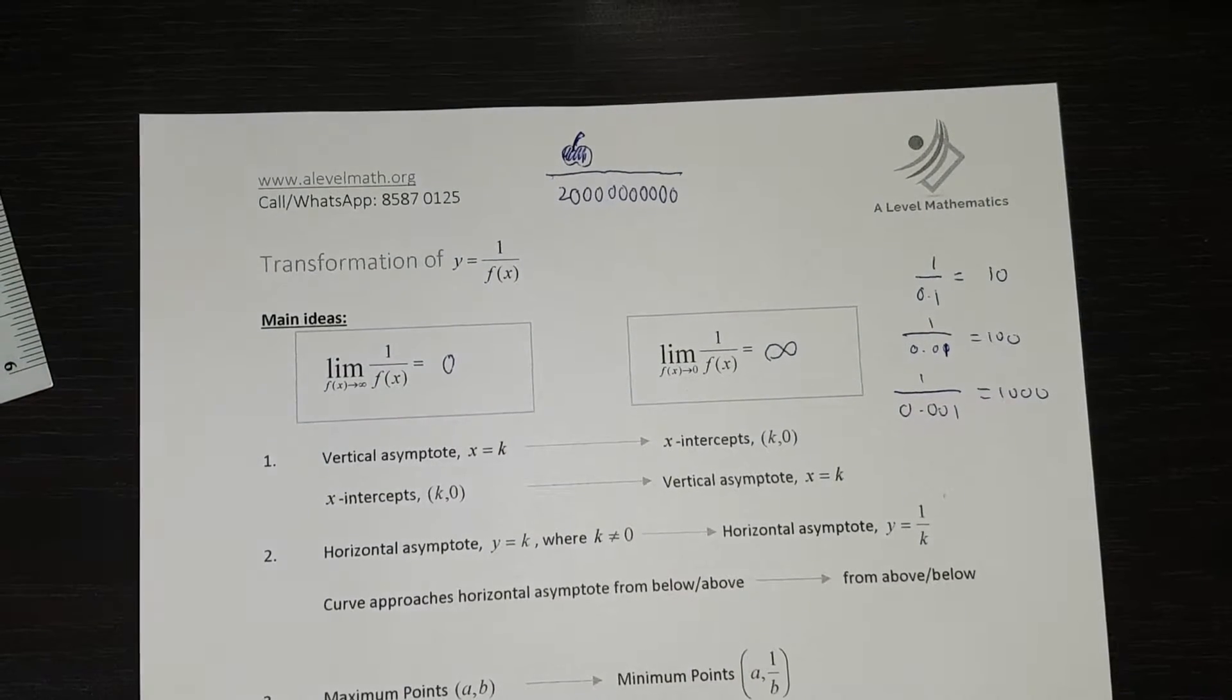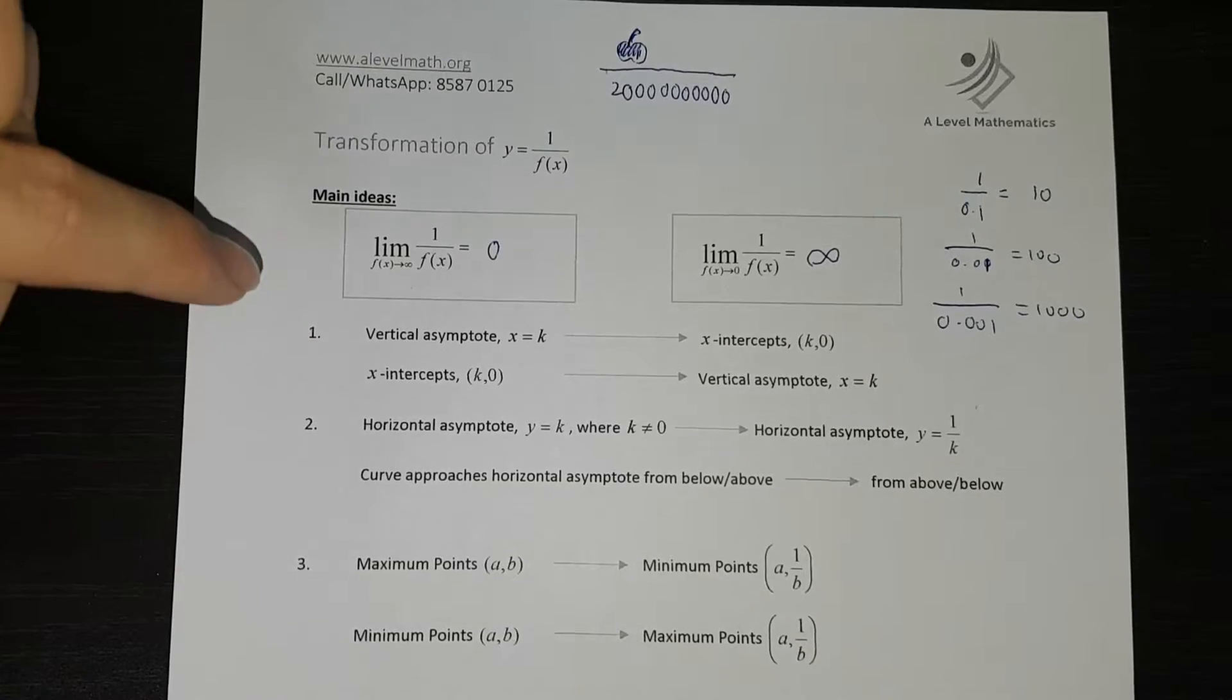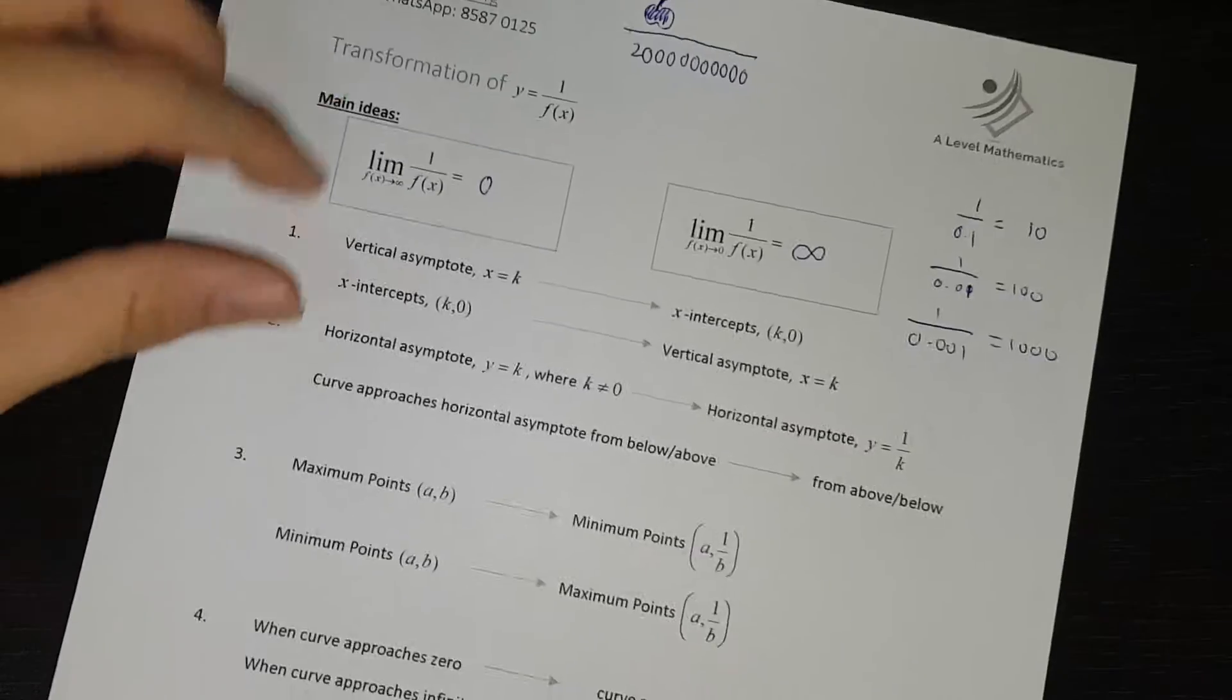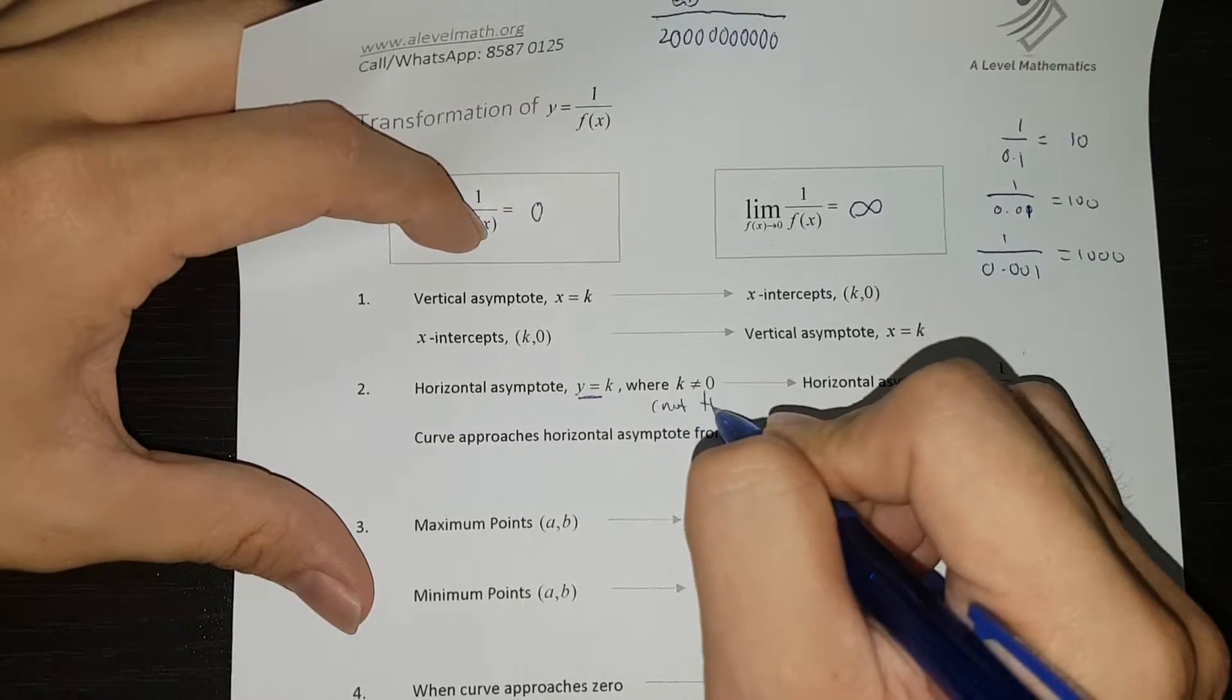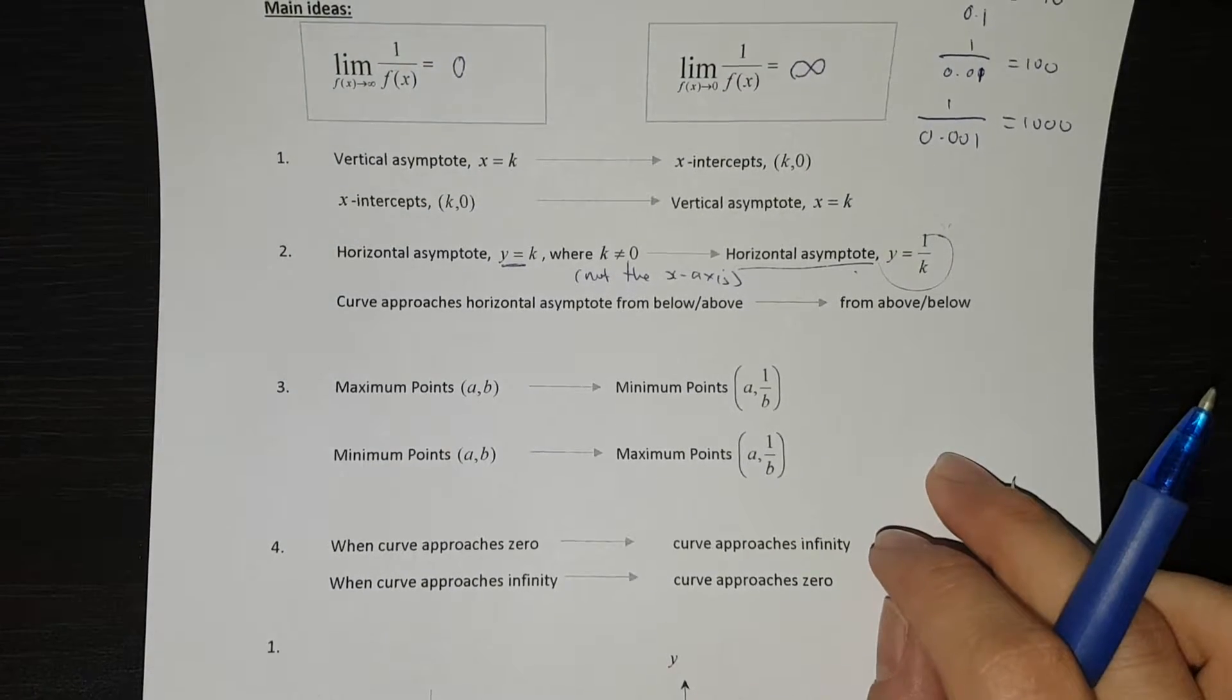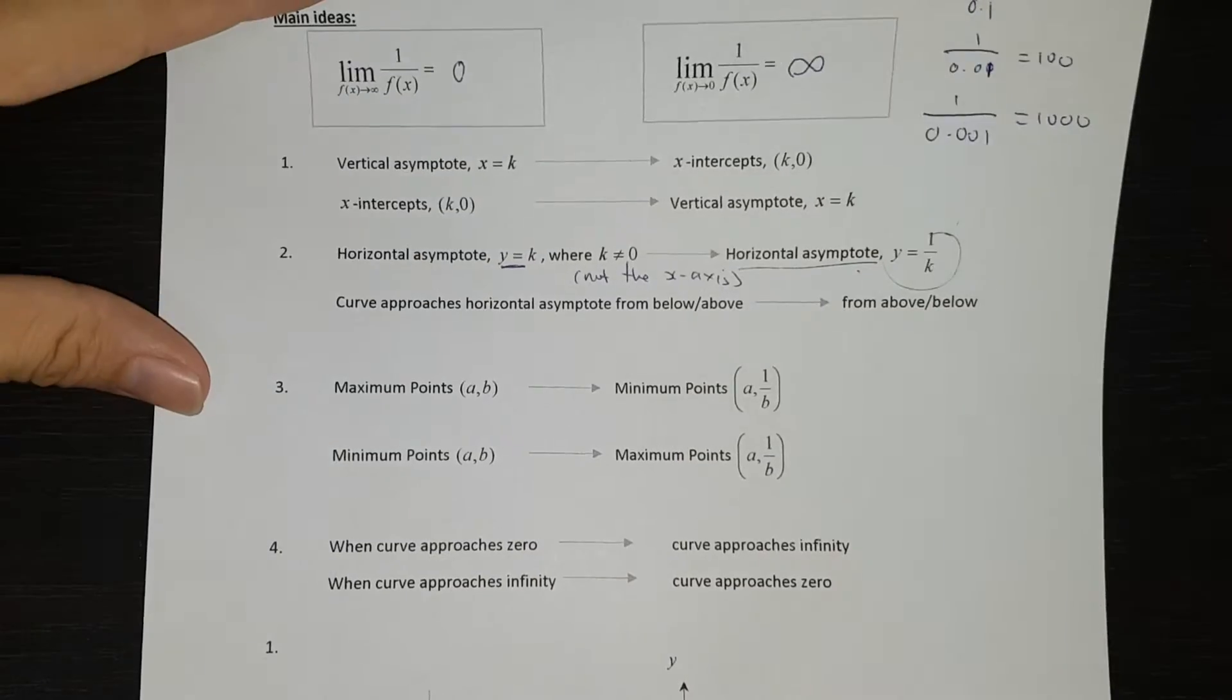Now, so because of these two main ideas, you definitely have interesting takeaway. So these are the main four things you need to take off when you are sketching the reciprocal graph. Number 1, the vertical asymptotes. Because vertical asymptotes tends to infinity, that's why it becomes x-intercept. And when it's x-intercept, where you have a 0 here, that's why it becomes a vertical asymptote. It tends to infinity. And then, after looking at the vertical asymptote, let's look at the horizontal asymptote. Now, horizontal asymptotes with y equals to k. I'm not talking about the horizontal asymptote, not the x-axis please. Horizontal asymptote will still remain as horizontal asymptote. It'll become y equals to 1 over k. And if the curve approaches horizontal asymptote from above, after you reciprocal it, you'll be approached from below. And if it's approaching from above, you'll approach from below after reciprocaling it. I will show you how it's done later.